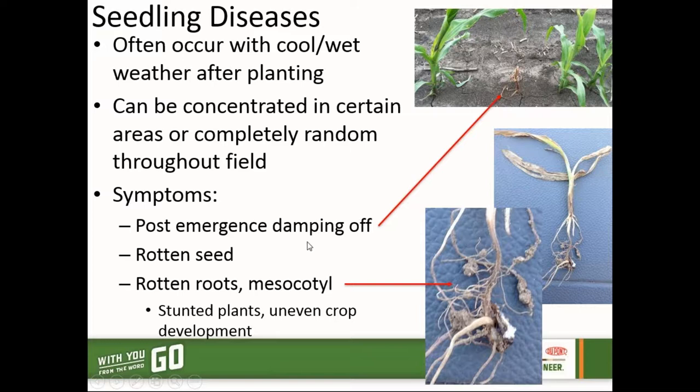In this example here, we've got a plant that has died in between a couple of healthy plants. That's an example of what we call post-emergence damping off, where this plant was attacked and killed by seedling diseases — probably from heavier disease pressure and maybe a certain microenvironment right around this plant that did not affect its neighboring plants on each side.